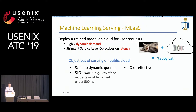Machine learning serving is to deploy trained models for users' requests, and we have seen rapid growth in demand for machine learning serving on public cloud thanks to its ease of use and unified user experience. In such a scenario, the model owner acts as a cloud tenant and service provider at the same time. As a service provider, we want scalability and SLO compliance for our users, and as a cloud tenant, we want the lowest cost possible.